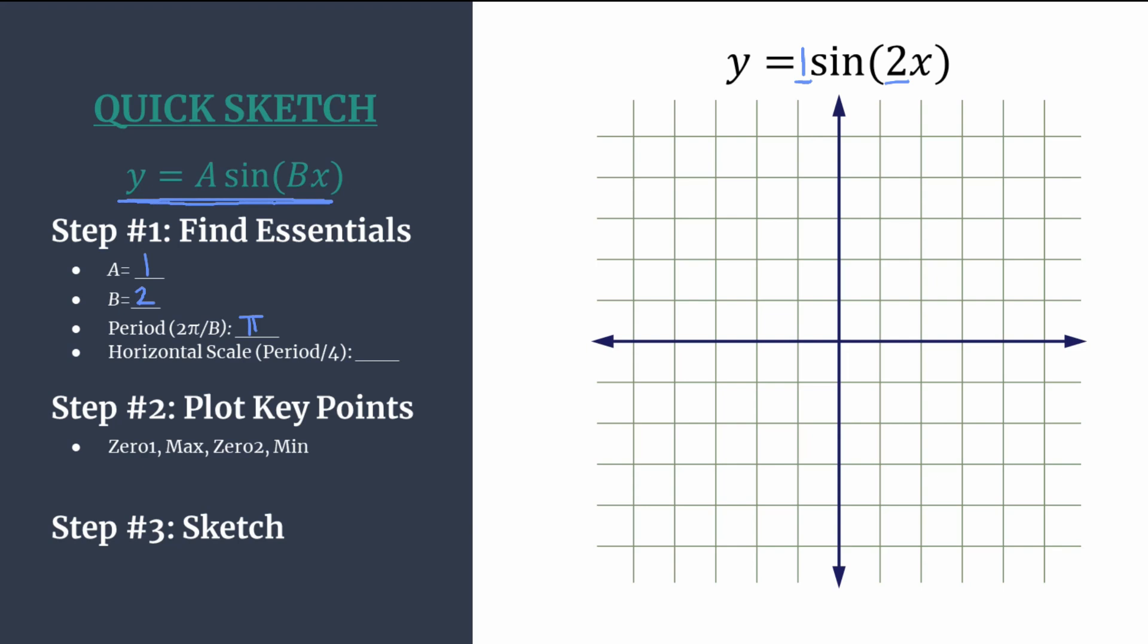When we set our scale and we're labeling our tick marks here, we're going to purposely take the period and divide by 4 and that way each of our key points lines up with a horizontal tick mark. So period divided by 4 is pi over 4. And that's how we'll label our horizontal axis.